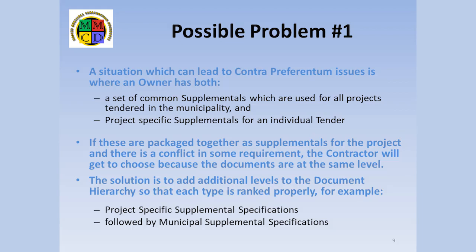Without changes to the contract documents, this situation results in a contra preferentum situation, where the contractor gets to choose. If an owner has both common and project-specific supplementaries, the MMCD Association recommends that additional lines be added to the GC 2.2.4 hierarchy to ensure that the project-specific supplementaries override the common ones. Naturally, this would be needed for each class of documents where the conflict might occur — general conditions, specs, or drawings. Of course, a better solution is to carefully screen both the common supplementaries and the project-specific supplementaries to eliminate conflicts at the time the tendering documents are being assembled.